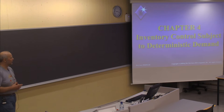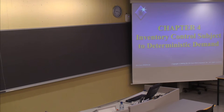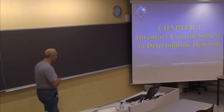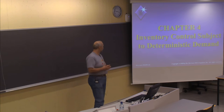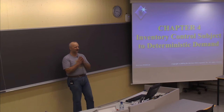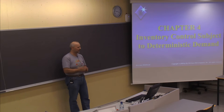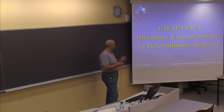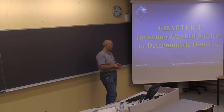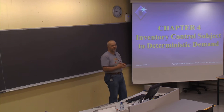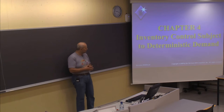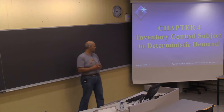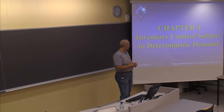We are ready to continue and today we will start on a new topic regarding inventory control subject to what we call deterministic demand, which means that you have a fixed rate — you know, or pretend to know, exactly what the demand will be for the coming periods. The opposite option is stochastic or uncertain demand, which requires adjustments to the models. First we will look at chapter four, and later in the course we will continue with chapter five, which concerns stochastic or uncertain demand.